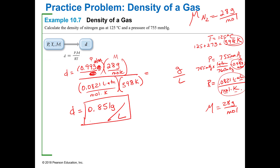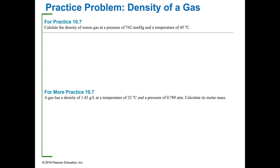Now you have some practice to figure out the density of a gas. Make sure you convert units correctly before plugging in. And this last practice problem gives you the density and asks you to calculate the molar mass. When you work that one out, you'll put your numbers in and find grams per mole — that's what molar mass is in. It's just another way of looking at the problem.